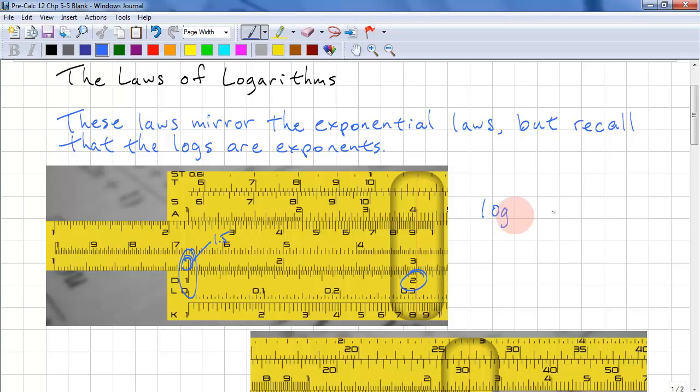So log 1.5 plus log 2 equals log 3. A slide rule ignores powers of 10, so this could easily be log 15 plus log 2 equals log 30. I hope you see the relationship here. We have 1.5 times 2 equals 3. 15 times 2 equals 30.